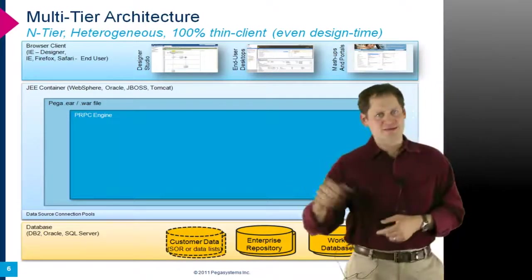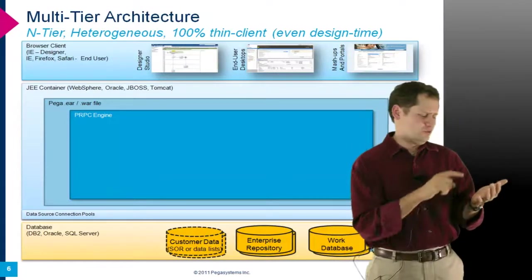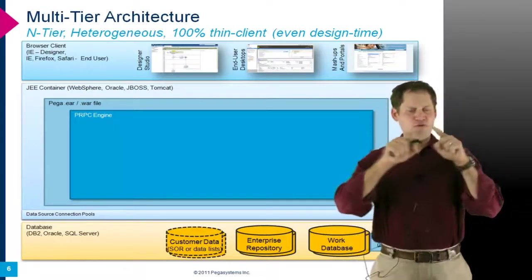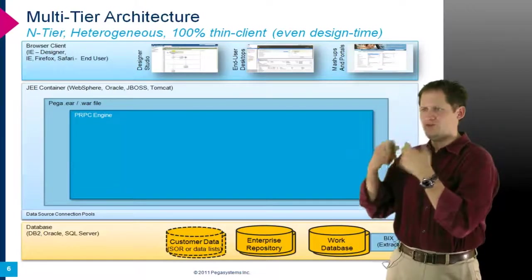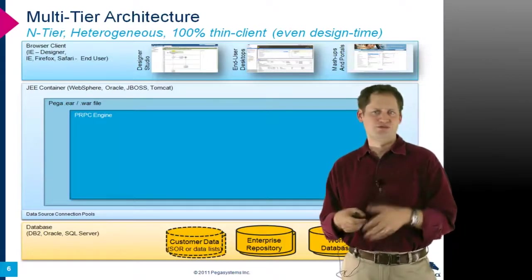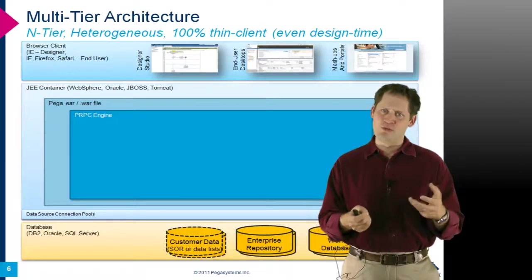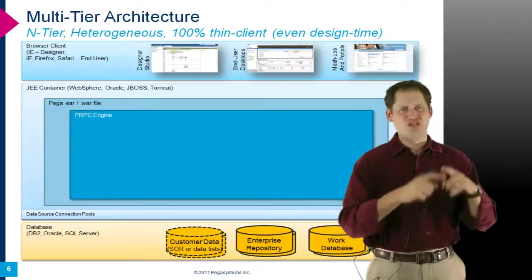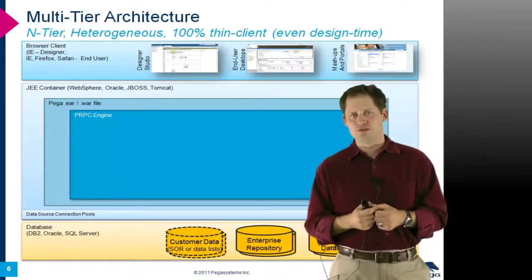The client tier is entirely browser-based — for design time when building processes or rules, and for the end-user environment, whether that's the full enterprise dashboard as in a CRM or CPM-style solution, or a small chunk of an existing screen implemented through a portlet technology like JSR 168 or 286, or through a mashup technology like Google Maps — embedding a chunk of PRPC UI inside an existing web page using JavaScript, JSON, and Ajax for dynamic binding. PEGA has an out-of-the-box mashup API for this.